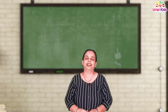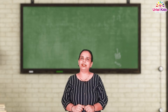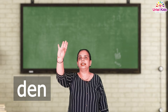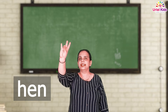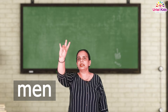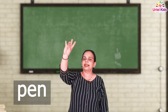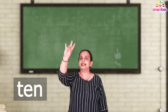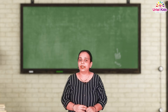Now the next group is the E-N end letter words, and we are going to do the tapping method. Let's do it. D, E, N — Den. Hen. Pen. T, E, N — Ten. Good job everyone.